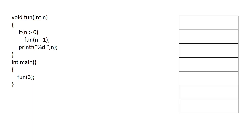Here you can see we have two functions: the main function and a function called fun. The main function is calling fun with the argument 3, so 3 is passed to this recursive function. Inside that, if n is greater than 0 we call the recursive function, otherwise we print the value of n.